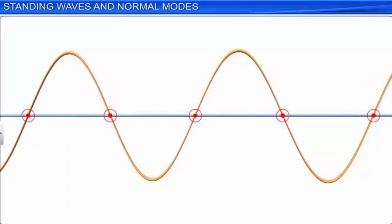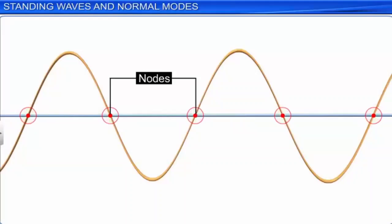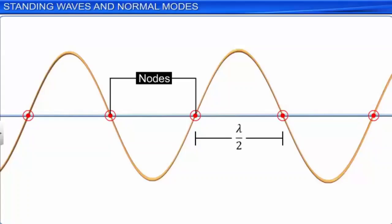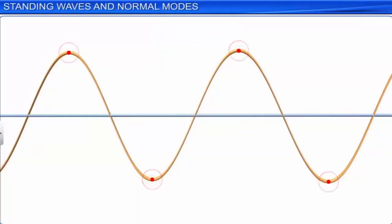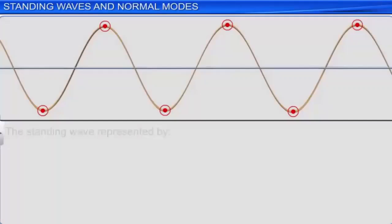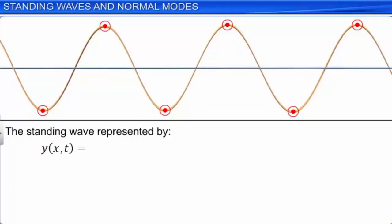Now let us find the positions of the elements of the stretched string where the amplitude of the standing wave is maximum. The standing wave is represented by y(x,t) = 2a sin(kx) cos(ωt). The amplitude equals 2a sin(kx). When |sin(kx)| = 1, the maximum possible amplitude is 2a.